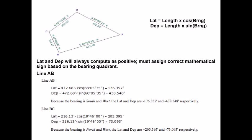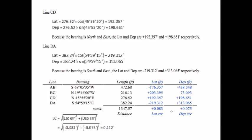For the line BC, the latitude uses the length of the side multiplied by cosine of the bearing, 19 degrees 45 minutes, giving 3.395. Since it is north, the latitude is positive. For the departure, length times sine of the bearing, and since this is west, the departure is negative. We proceed the same way for lines CD and DA.